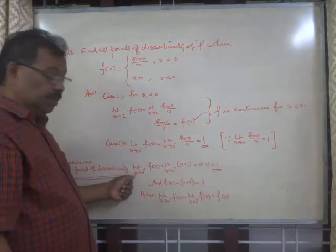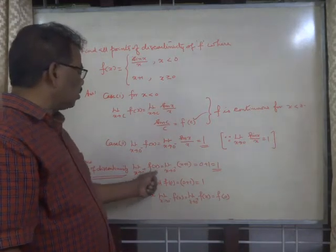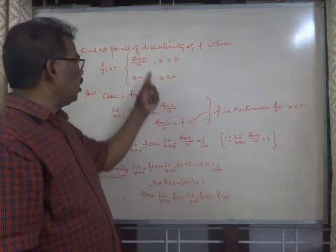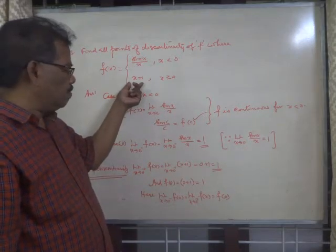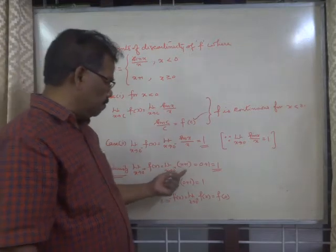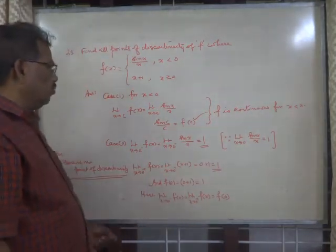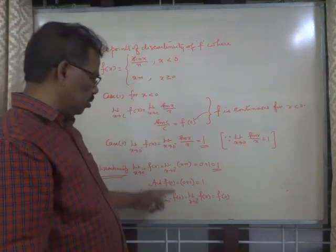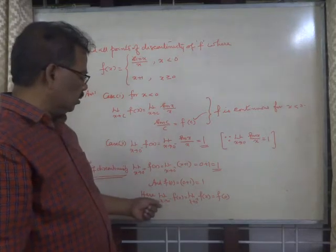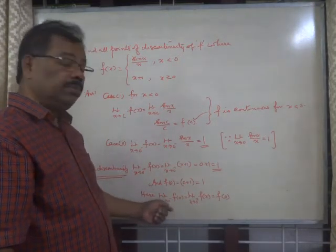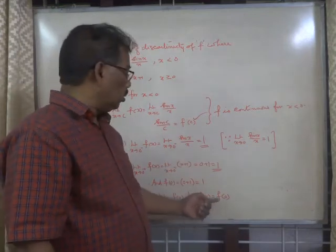Now the other case: limit x tends to 0 plus of f(x). Here the function is given as x + 1 for x greater than or equal to 0. So the limit x tends to 0 plus of (x + 1) equals 0 + 1 = 1. And f(0) is also x + 1, that is 0 + 1 = 1. So the left-hand limit equals the right-hand limit equals f(0).